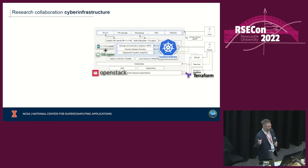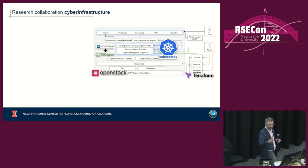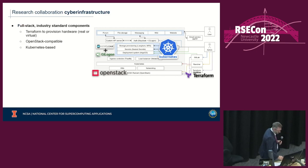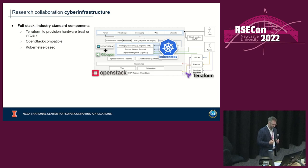So what do I mean by cyber infrastructure? This shows the basic components and gives a sense of how things are connected. Cyber infrastructure here refers to this entire construction of interconnected hardware and software components. The important characteristic is that it's a full-stack, industry-standard, component-driven system. Almost none of the components are things we created or developed at NCSA.